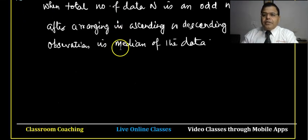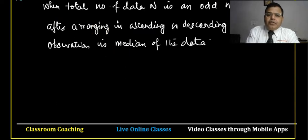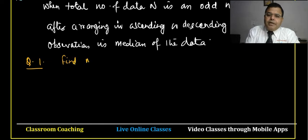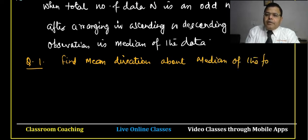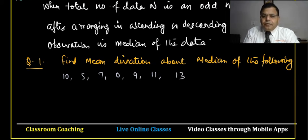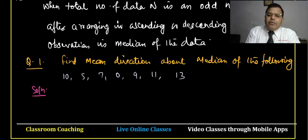Let us discuss a question. Question number one: find the mean deviation about median of the following data: 10, 5, 7, 0, 9, 11, 13. The solution: first we arrange them in ascending order — 0, 5, 7, 9, 10, 11, 13.